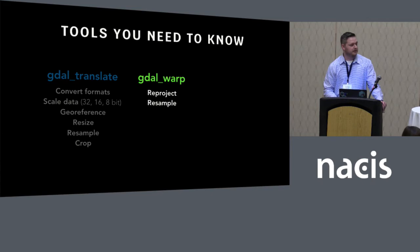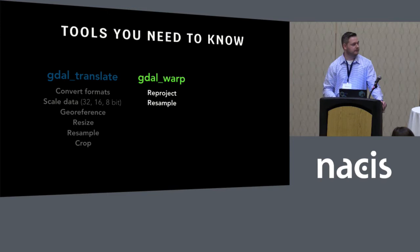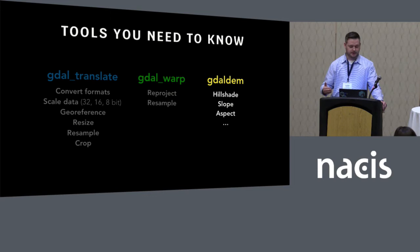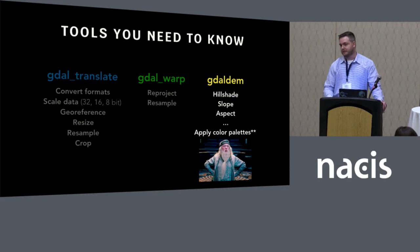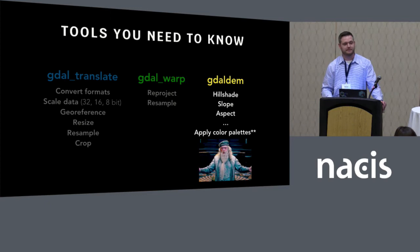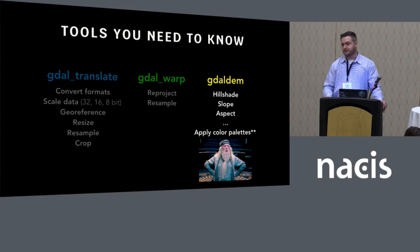The second is GDAL Warp, which does reprojecting and resampling — so you can go from a regular latitude/longitude grid to something like an Albers Equal Area projection at a specific pixel resolution. The third is GDAL DEM. It does things with digital elevation models, as its name suggests — hillshade, slopes, aspect. But you can also apply color palettes, which its name does not suggest. I think this is one of the most hidden and buried tools in all of geospatial, because if you want to apply color palettes, there's no reason you'd look under a digital elevation tool. Nonetheless, this is the real MVP — applying color to data is pretty much one of the things we do most often.